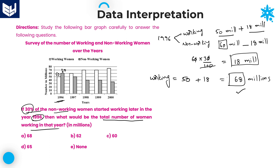18 million of non-working women started working, so that 18 million is added to the working women. Working women initially in 1996 were 50 millions; additionally 18 million added, so the value becomes 68 millions. 68 millions is the right answer. Option A is the right choice for this question. I hope you understand each and every problem in this session. In the next session, I will come up with some more examples. Thank you, thanks for watching.